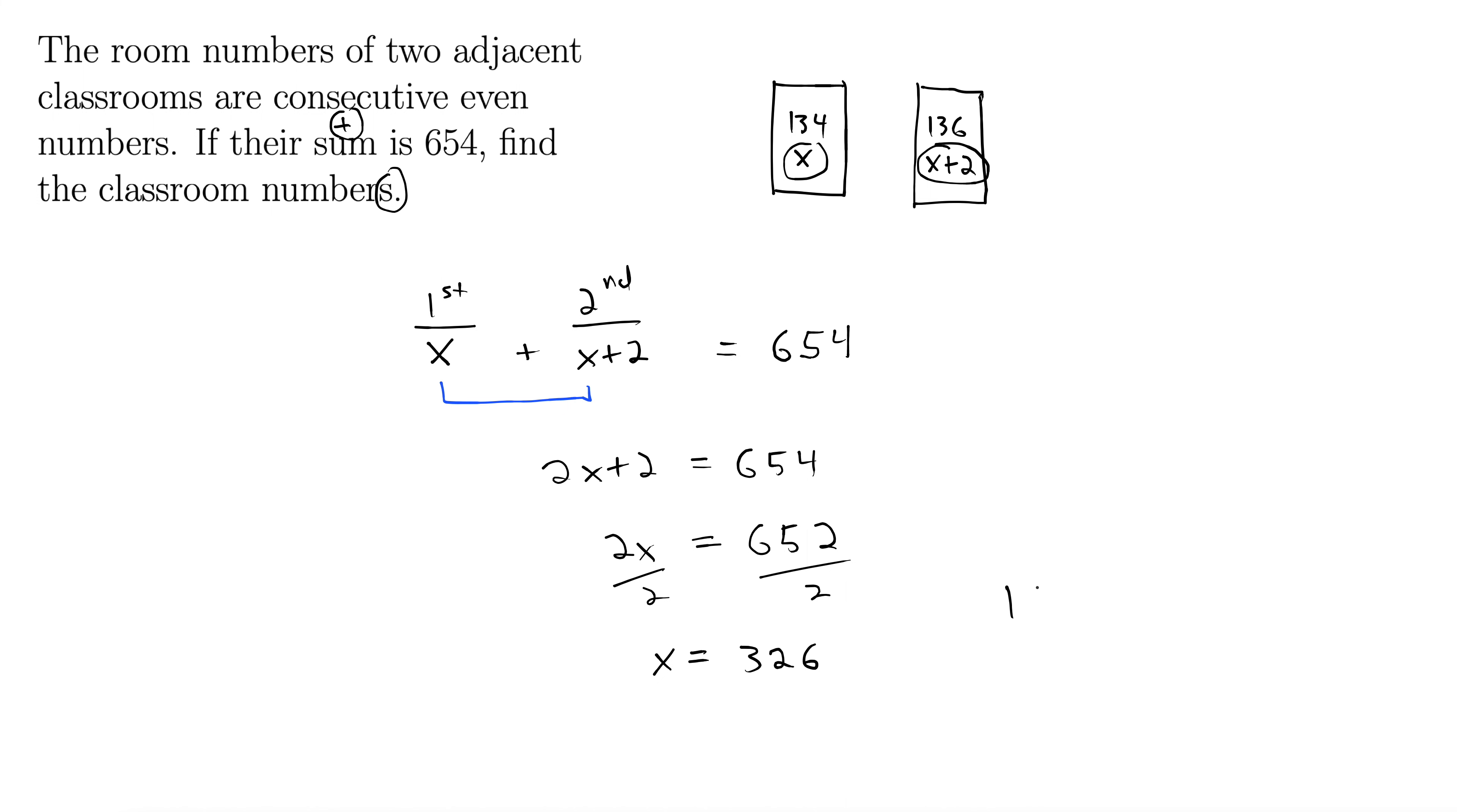So let's write out a nice answer to this. The first one is 326. That's our x, and the next one is x plus two. The next consecutive integer from there is 328, and there are the two consecutive even classroom numbers.